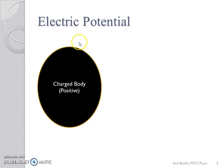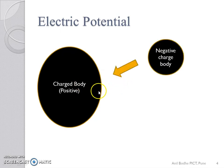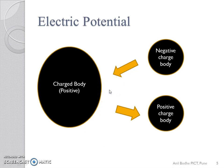For understanding the concept of electric potential, we consider a positively charged body. When this body is charged, work is done in charging it. This work done is stored in the body in the form of potential energy. Now, this body can attract an opposite charged body and can repel a similar charged body. That means, the charged body has the ability of doing work.